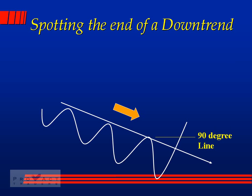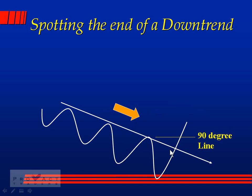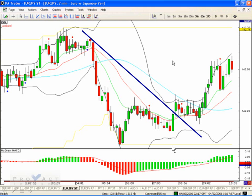For a downtrend ending, it's the same in reverse. You've been selling every time price comes up to the trend wall — and suddenly instead of turning back down, it keeps going right through the trend wall. Go back to the previous resistance and draw a horizontal line. If price breaks through that line, the downtrend is over. On the chart example, once it breaks out above that horizontal resistance line, we're now going the other way.